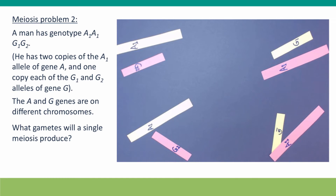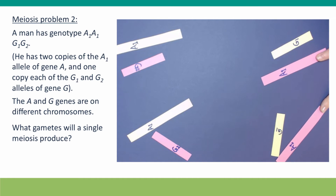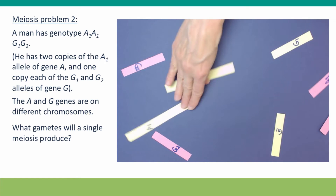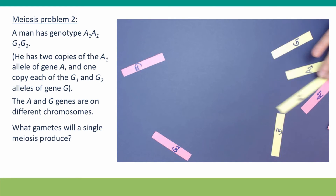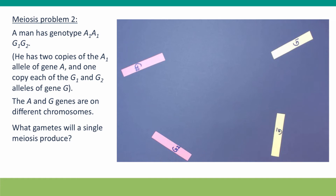Now, many of you are probably saying: wait a minute, you made it more complicated than it needed to be. And you're absolutely right. Because the man was homozygous for gene A, we didn't really need to follow gene A at all in this problem. We knew from the start that all the gametes were going to have the A1 allele, because that's the only allele he had — two copies of A1. So we could have completely removed those chromosomes from consideration.